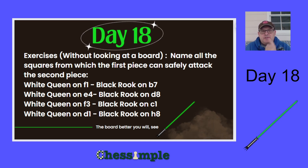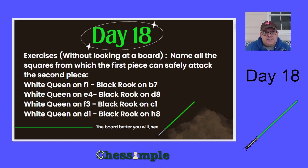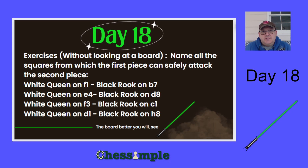How this works for these next three days is we have a piece listed on the left side and a piece listed on the right side in these exercises. What we want to do is name all the squares from which the first piece can safely attack the second piece. So our first exercise is to name all the squares from which a queen on f1 can safely attack a black rook on b7. Be careful not to include a square that the b7 rook can attack.